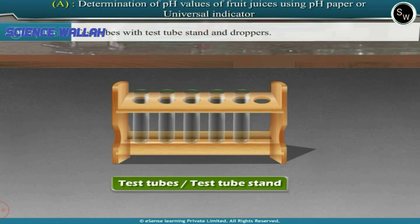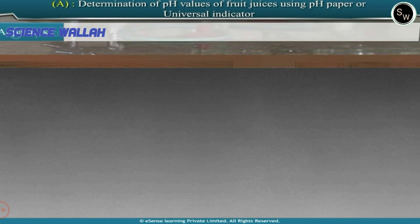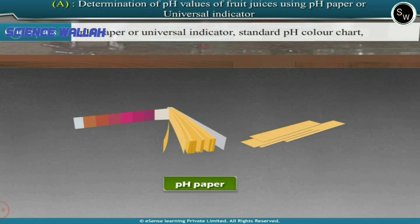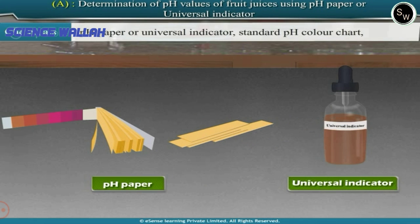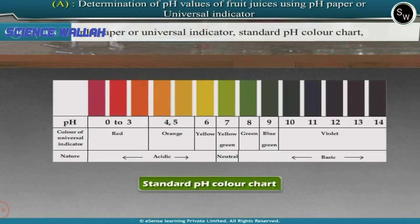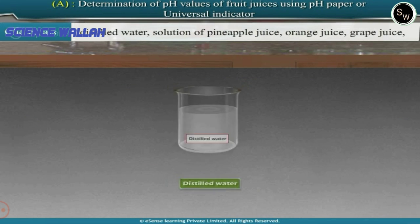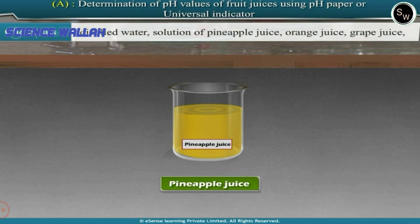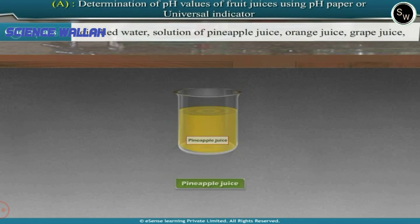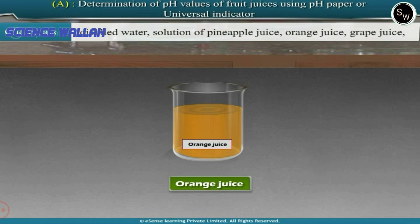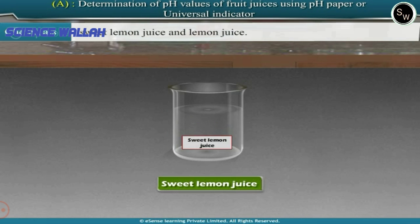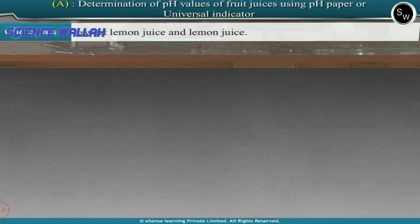To perform this experiment, the apparatus required includes test tubes with a test tube stand and droppers. The chemicals required are pH paper or universal indicator, a standard pH color chart, distilled water, and solutions of pineapple juice, orange juice, grape juice, sweet lemon juice, and lemon juice.